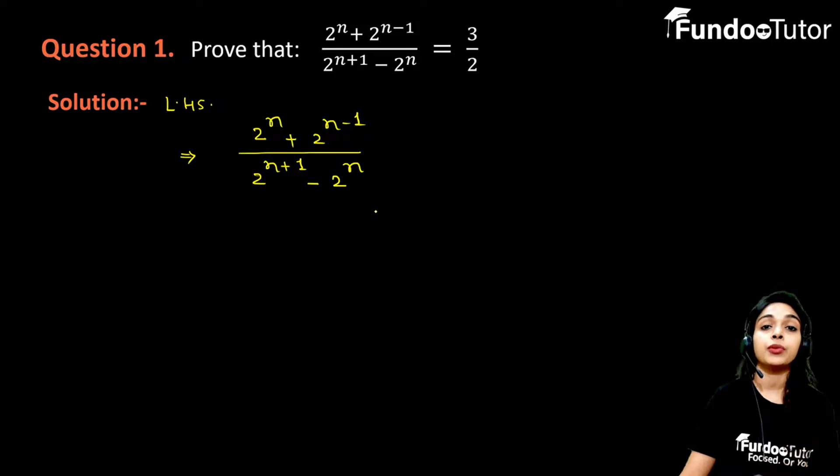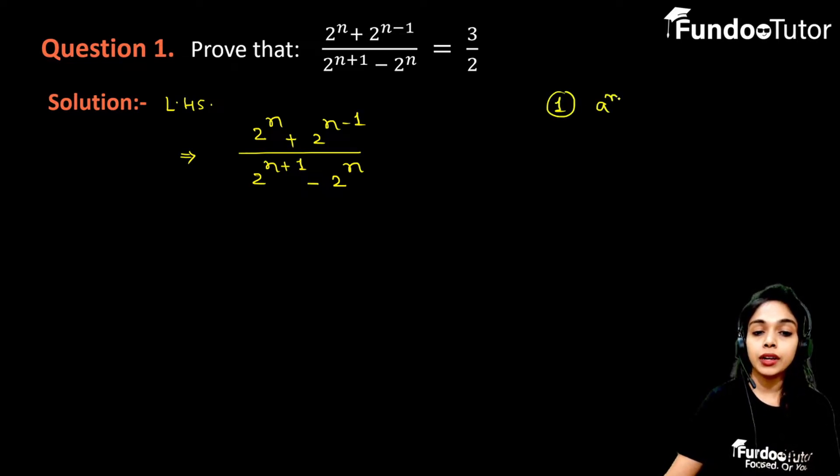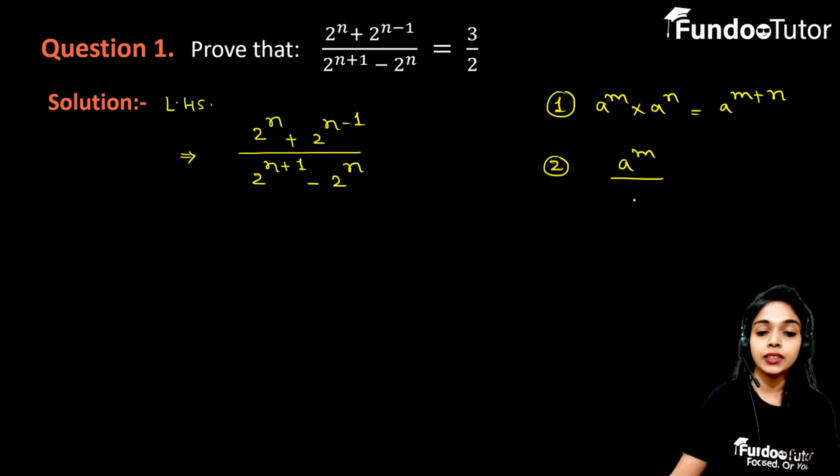To simplify it, we will use product law and quotient law which we have already learned in module 28. Product law is a to the power m into a to the power n equals a to the power m plus n. And quotient law is a to the power m divided by a to the power n which equals a to the power m minus n.